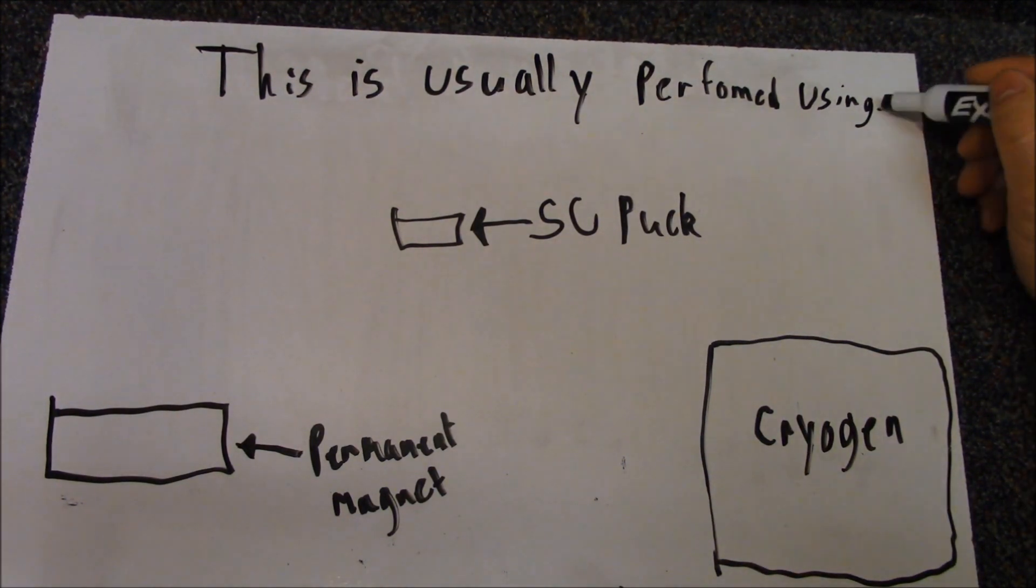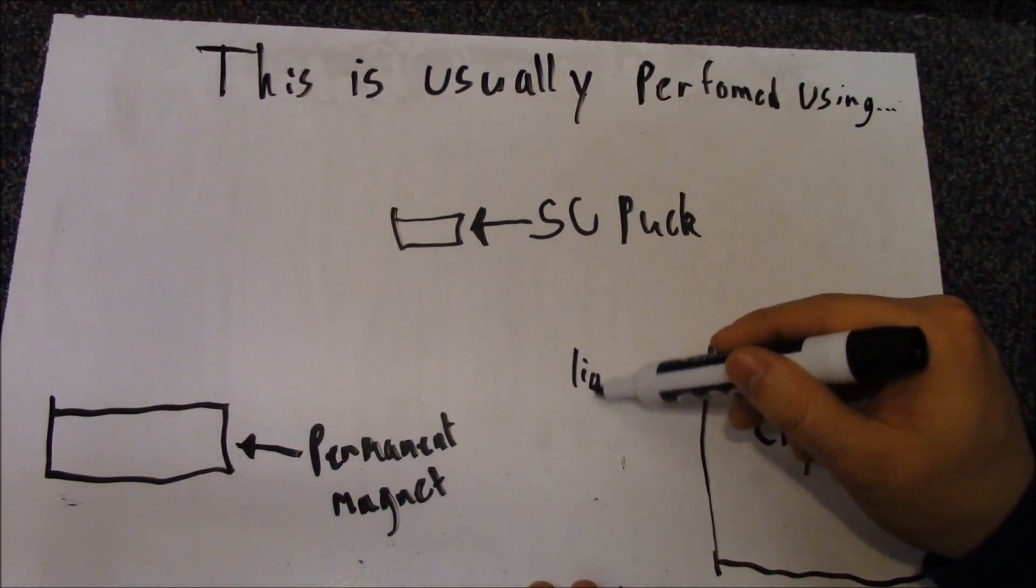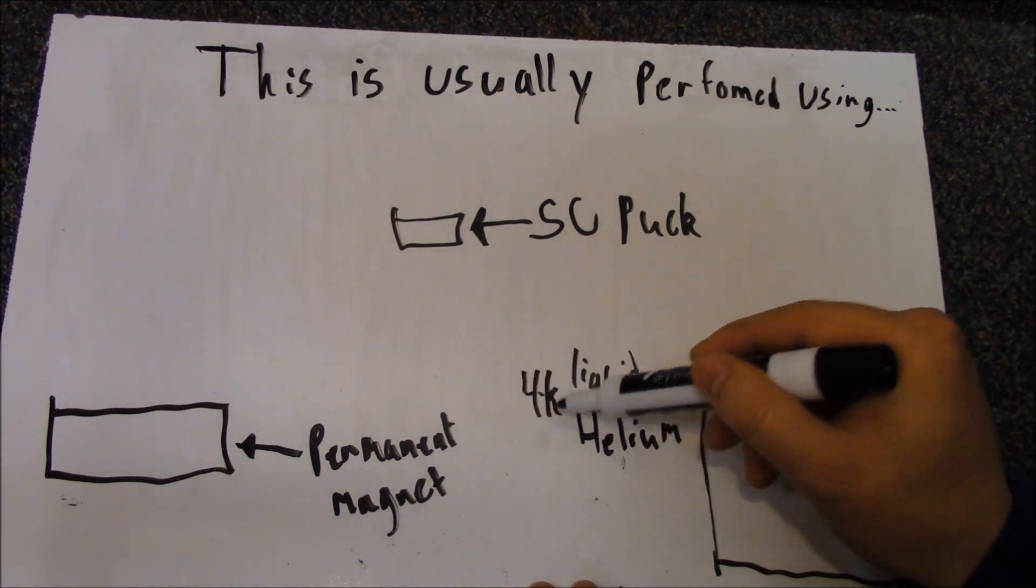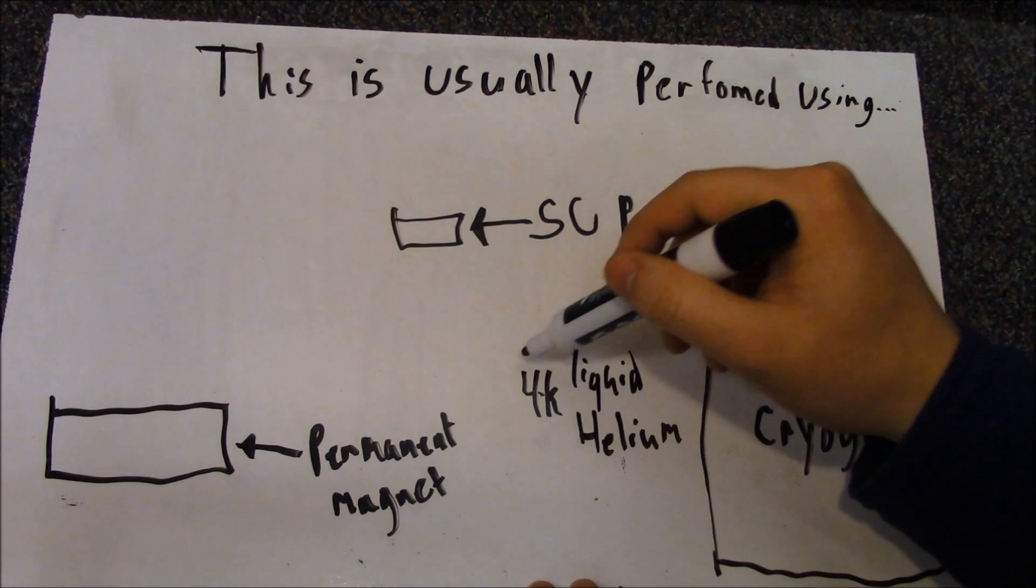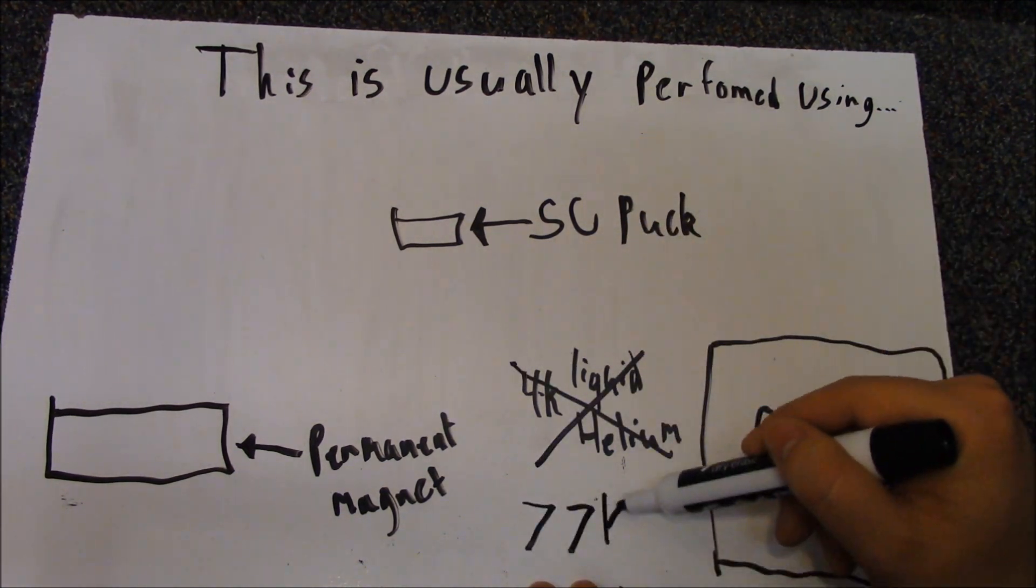To demonstrate a Type 1 superconductor, I'd want liquid helium, which is at 4 Kelvin. Unfortunately, liquid helium is way too expensive for a demonstration, forcing us to use liquid nitrogen at a balmy 77 Kelvin.